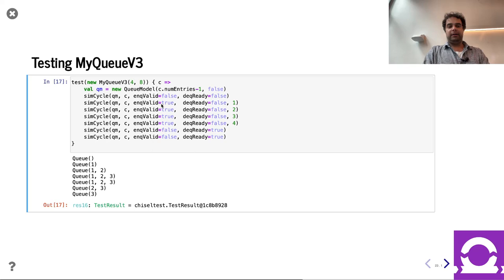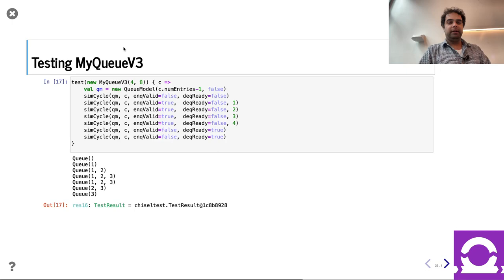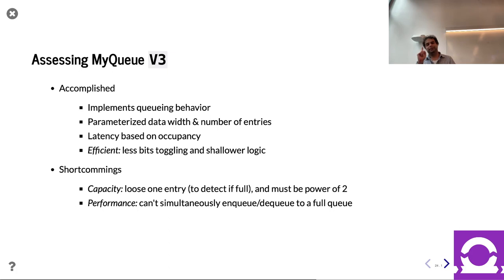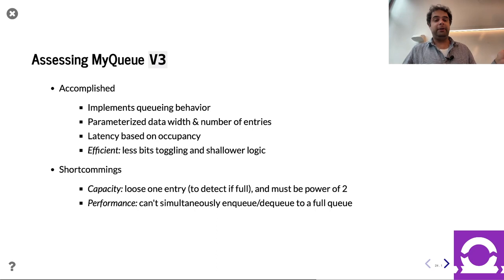Let's go ahead and fire this thing up — it works. Here we do a more complicated test case, fill things up, get the right behavior, making sure the model knows it only has N minus one entries. It does all that. So this works. The shortcomings you can probably see coming: we have a queue, parameterized number of data and entries, latency based on occupancy, in-place architecture means less bits toggling and much shallower logic. Before we were worried about priority encoder depth scaling linearly; in this case the mux to get into and out of the reg of Vec will grow log N rather than N.